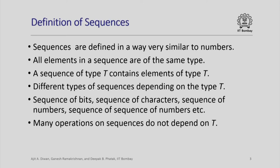Let us look at a formal definition of sequences, and the definition is again very similar to that for numbers. Here we always assume that all the elements in a sequence are of the same type, and we will call such a sequence a sequence of type T. If all the elements in the sequence are of type T, then we call it a sequence of type T, and we get different types of sequences based on what the type T is.